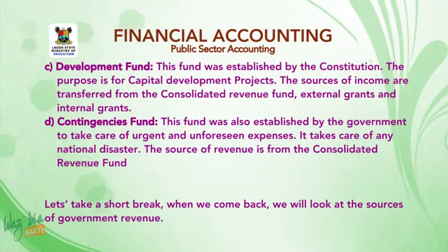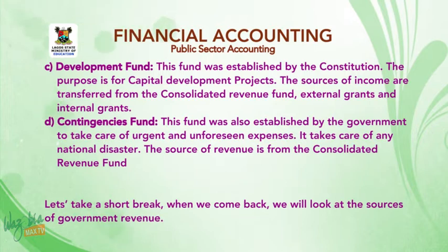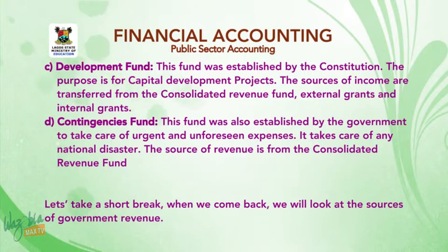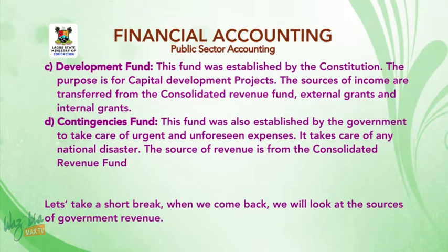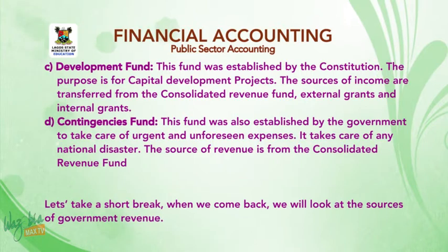C, the Development Fund — this fund was established by the constitution for the purpose of capital development projects. The sources of income are transfers from the Consolidated Revenue Fund, external grants, and internal grants. D, the Contingency Fund — this fund was established by the government to take care of urgent and unforeseen expenses, including any national disaster. Its source of revenue is from the Consolidated Revenue Fund.